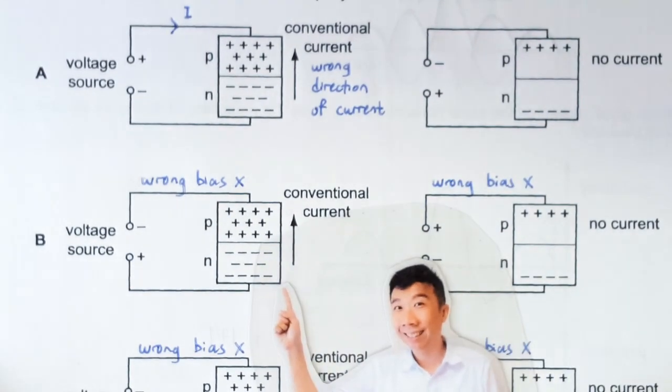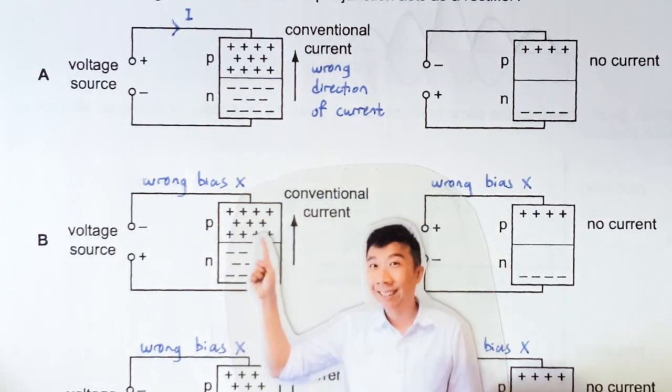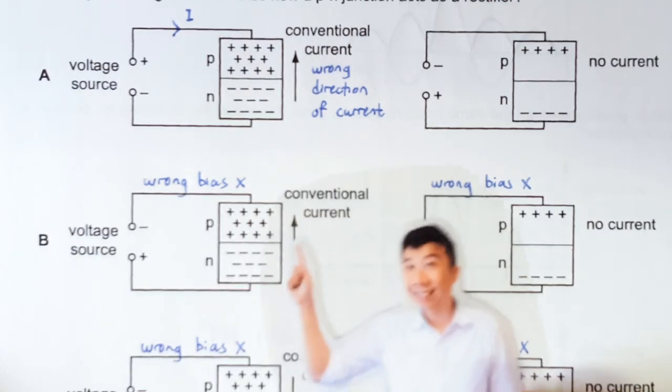Option B is wrong because if you are connected this way, you are actually putting the p-n junction into reverse bias. Under reverse bias, there shouldn't be any current flowing.